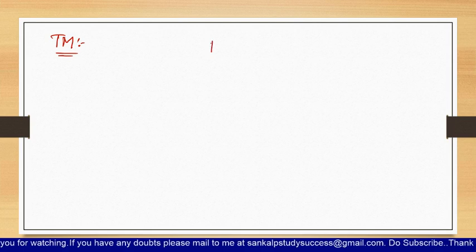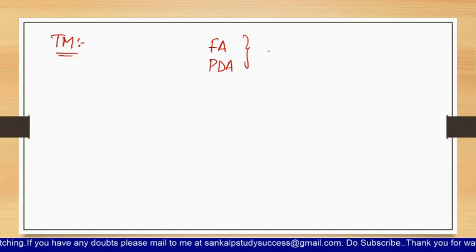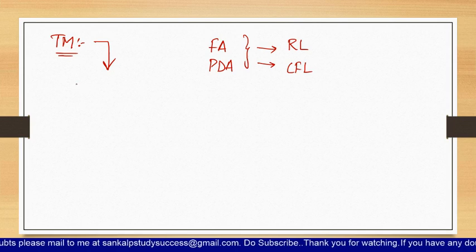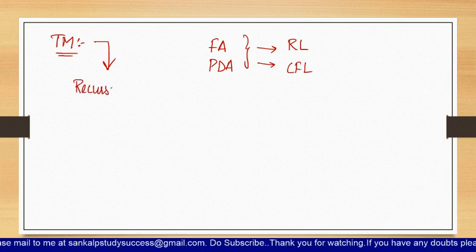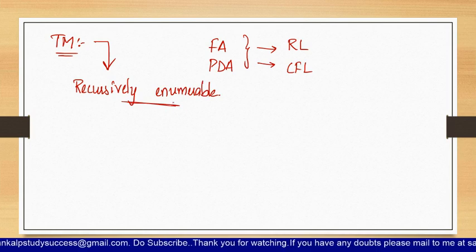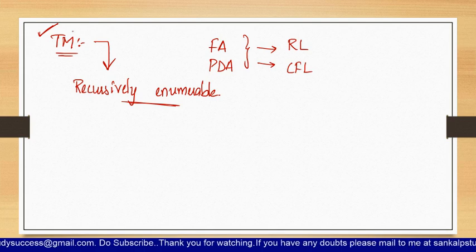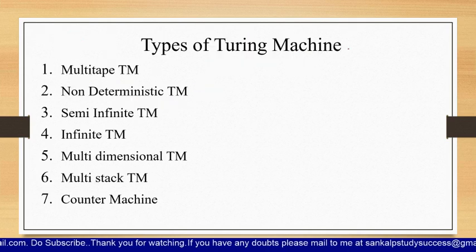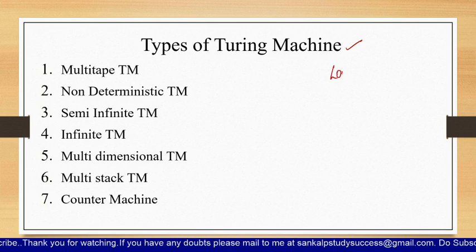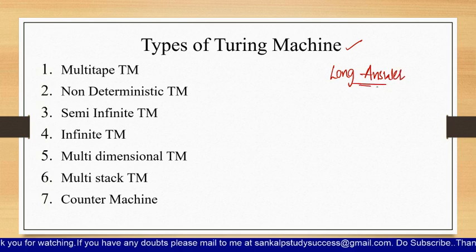Coming to the Turing machine — a Turing machine is similar to the finite automaton and the pushdown automaton you have seen previously. The finite automaton was used to accept regular languages, and the pushdown automaton was accepting context-free languages. This Turing machine is going to accept recursively enumerable languages. The types of Turing machine we will discuss here are the most important questions for external exams, either for 5 marks or 10 marks.